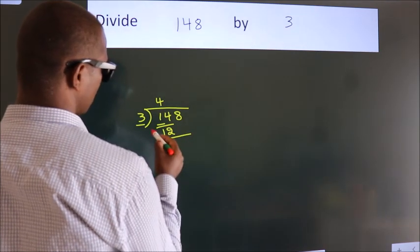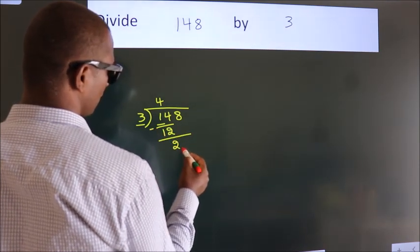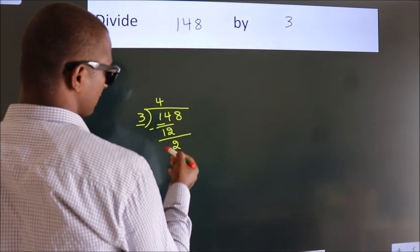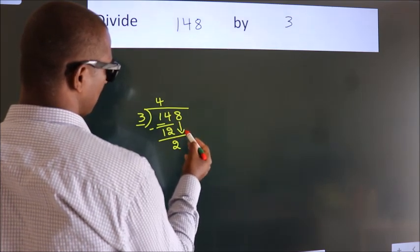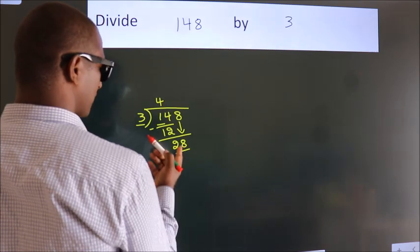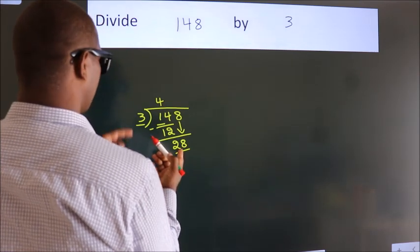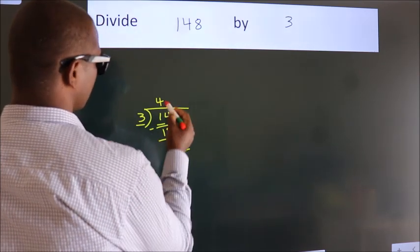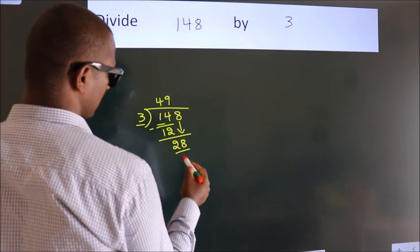Now we subtract and get 2. After this, bring down the next number, so 8 down, giving us 28. A number close to 28 in the 3 table is 3 nines 27.